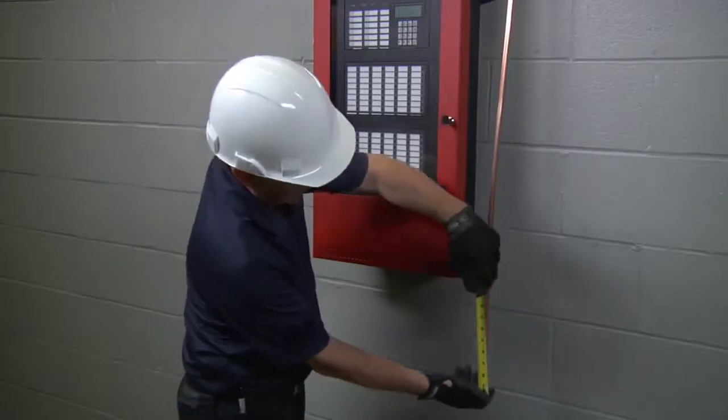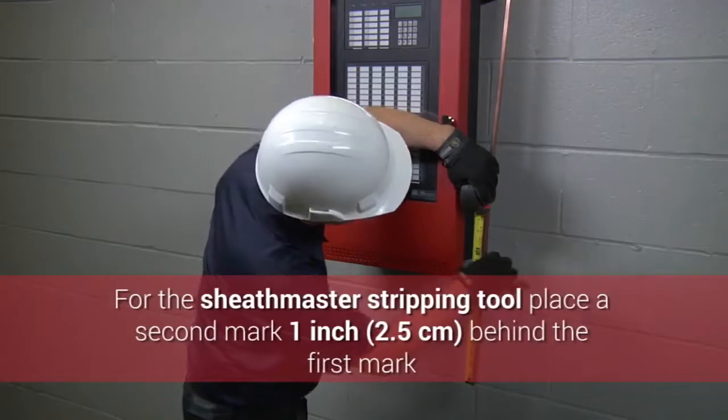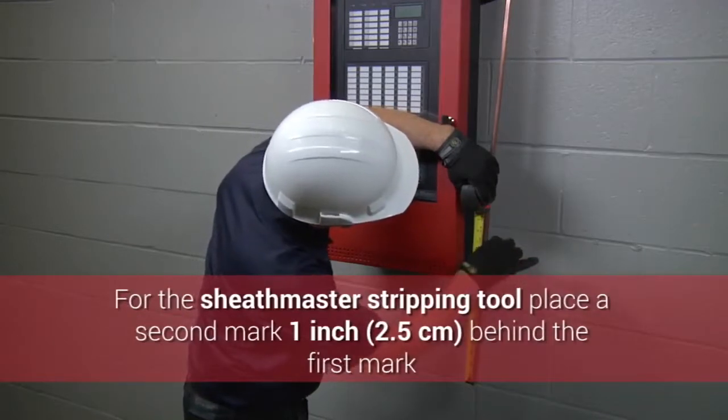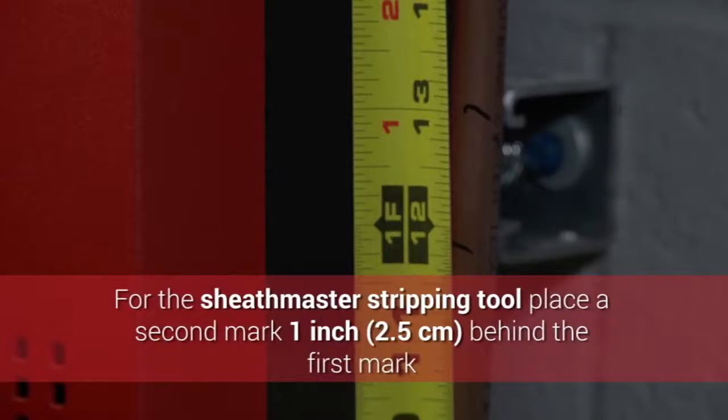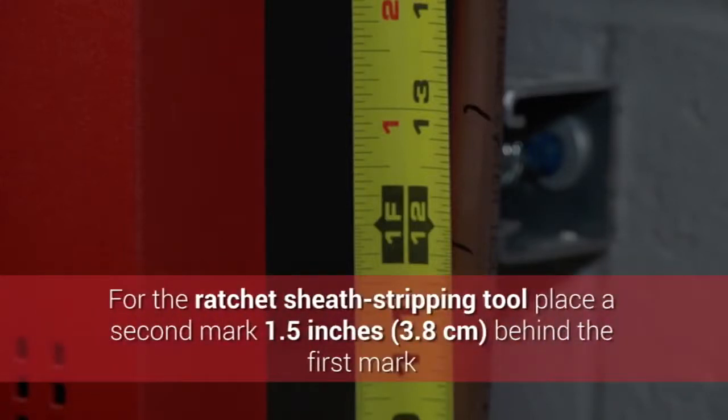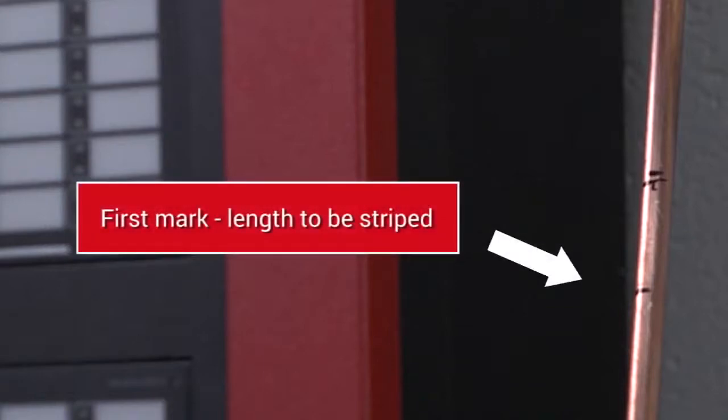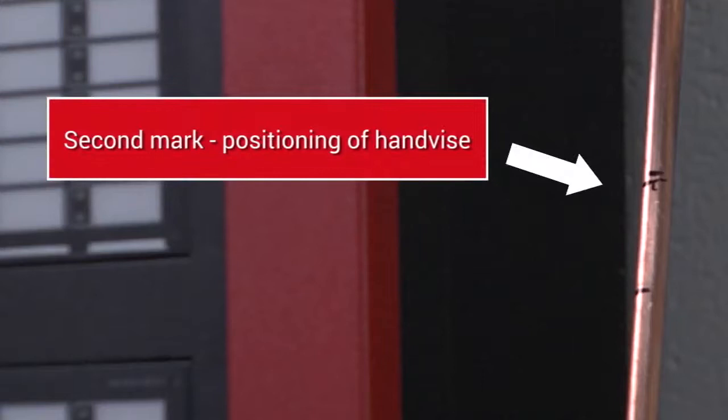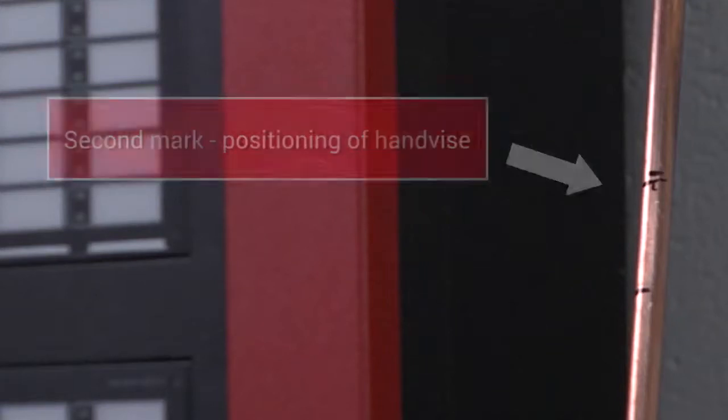Now place a mark on the sheath for the tail length required, 12 inches or 30 centimeters being standard, as this is the length of sheath to be removed. If you're using a sheath master stripping tool, place a second mark one inch, 2.5 centimeters, behind the first mark. If using the ratchet sheath stripping tool, place the second mark at one and a half inches, 3.8 centimeters, behind the first mark. The sheath will be stripped back to the first mark exposing the conductors. The second mark from the end is only used to position the hand vise for final stripping.